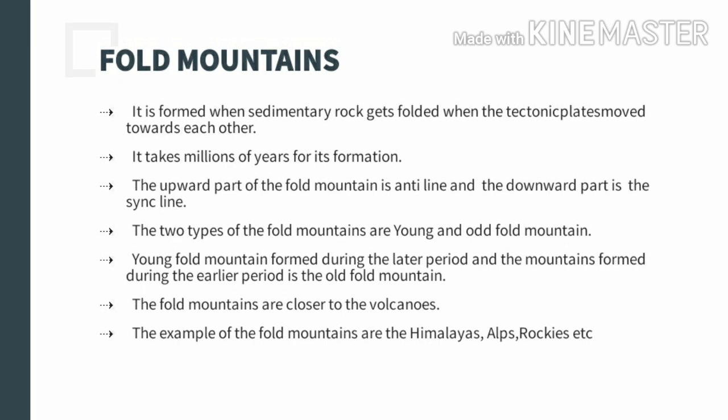There are two types of fold mountain. The first is known as the young fold mountain. It is the newest group of fold mountains, basically formed during the alpine orogeny. When the process of alpine orogeny was taking place, the formation of the young fold mountain took place. This young fold mountain has great altitude, meaning great height.